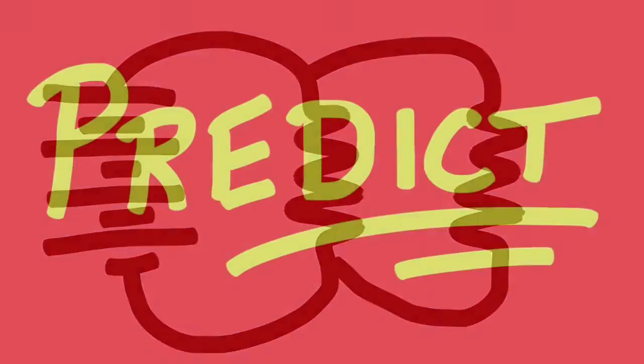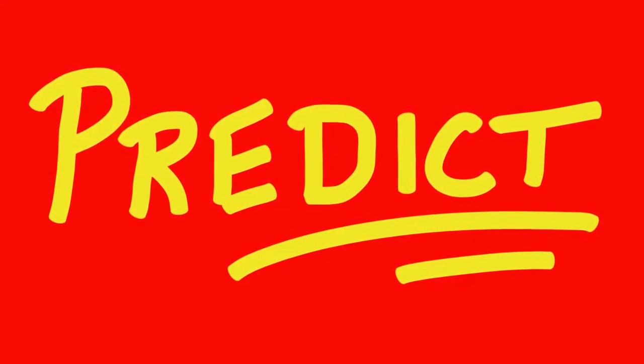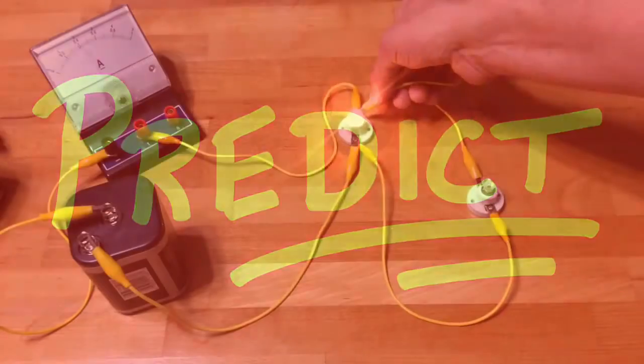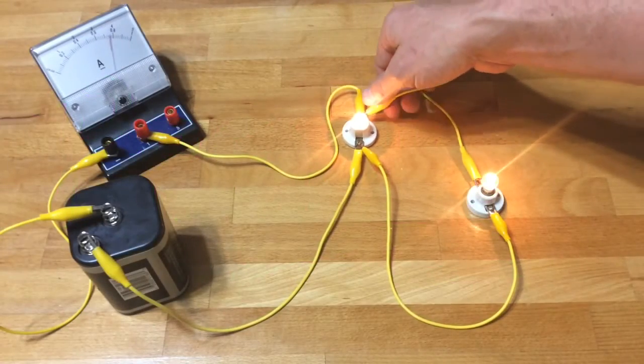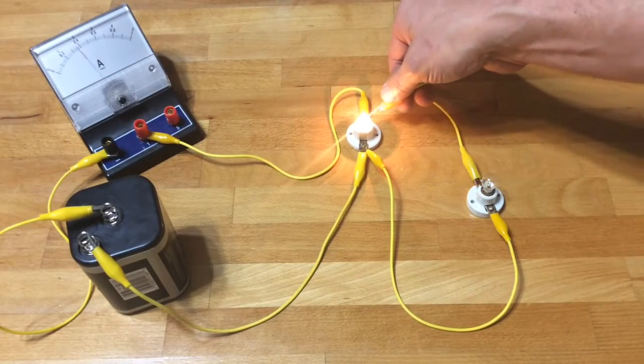Now let's predict. What's going to happen to the current in the circuit, the resistance in the circuit, as you add that second bulb in parallel? You probably quit predicting by now, but look at that.